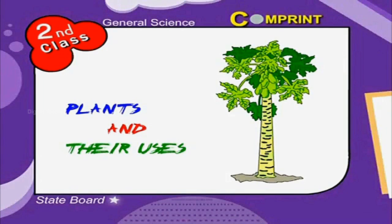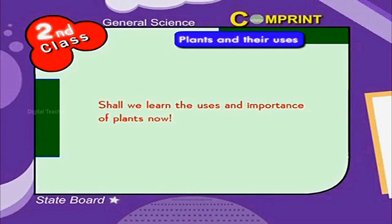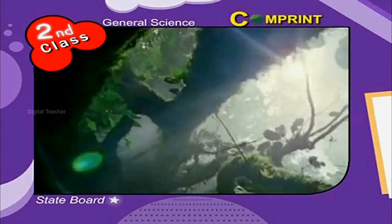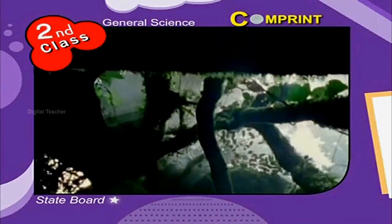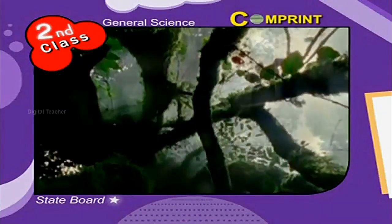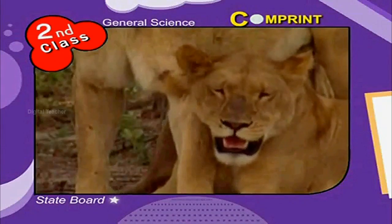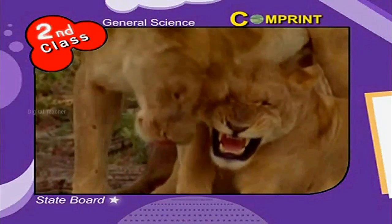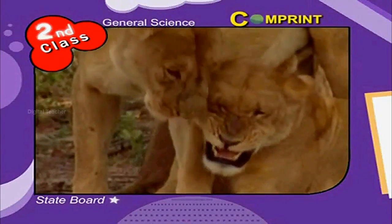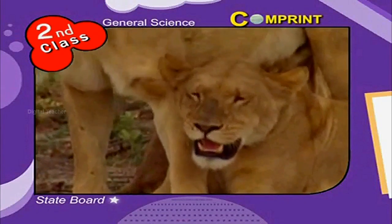Plants and their uses. Children, shall we learn the uses and importance of plants now? The most important thing we get from plants is oxygen. Plants give oxygen to us, which is life for all animal beings. So we can say that life cannot exist on earth without oxygen.